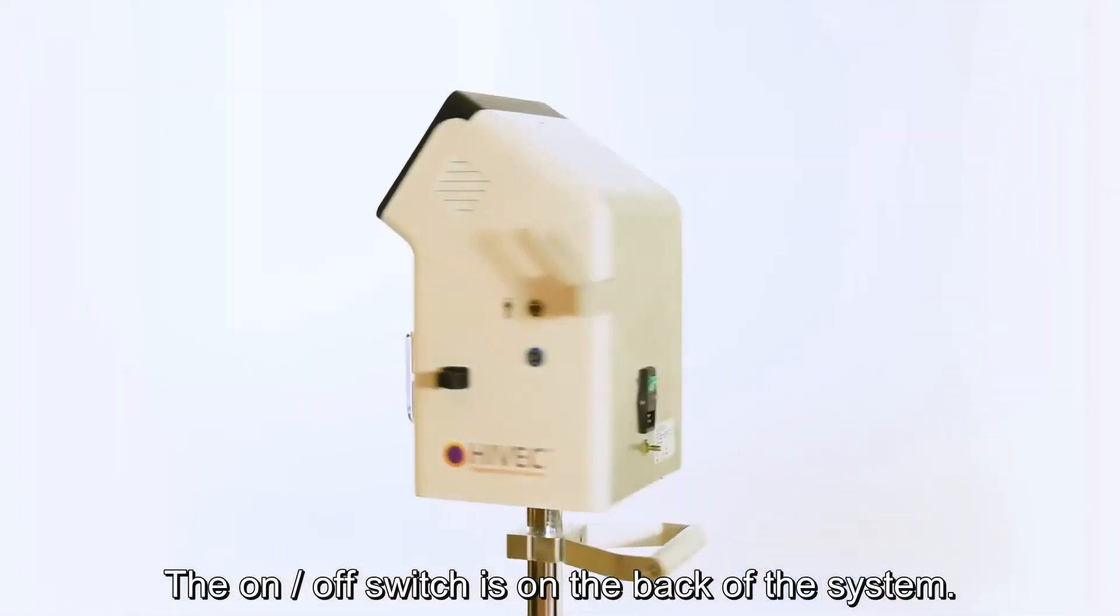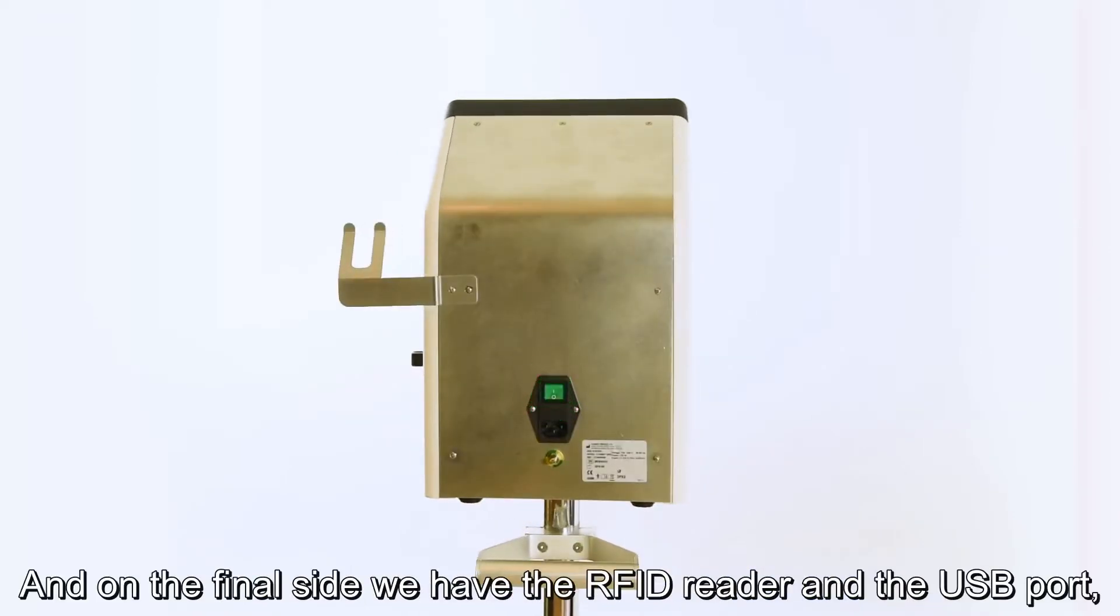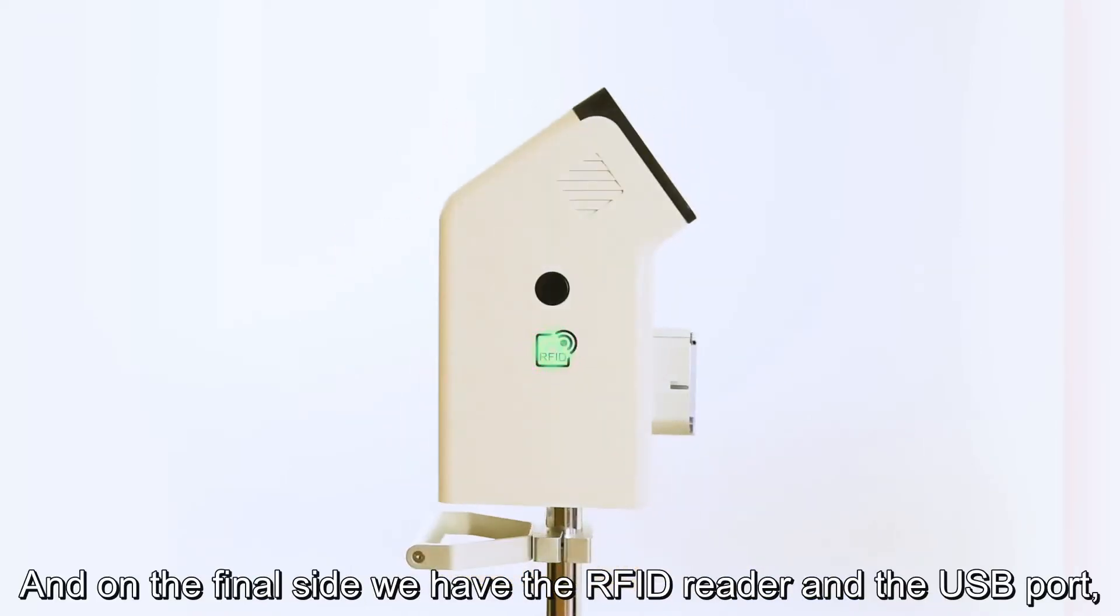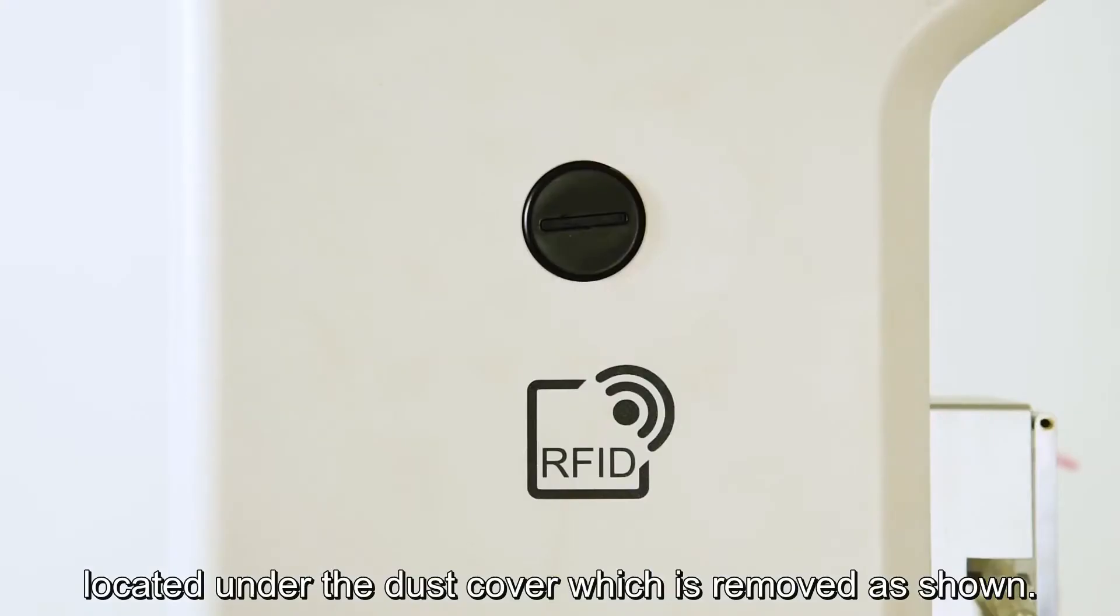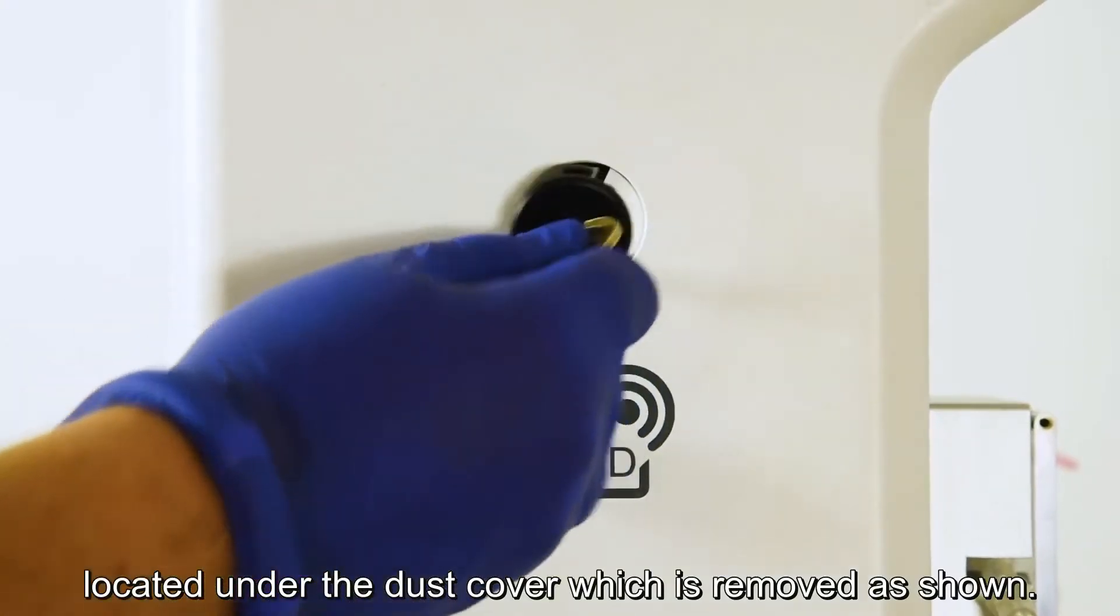The on-off switch is on the back of the system and on the final side we have the RFID reader and the USB port located under the dust cover which is removed as shown.